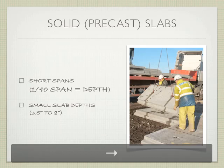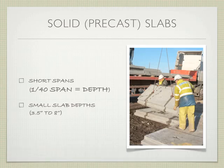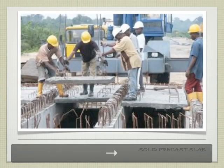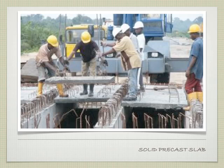Starting with the solid precast slab, we're talking about very short spans. One-fortieth of the span would be the depth, and the depth is going to be three-and-a-half to eight inches — so somewhere in the neighborhood of 20 feet in span. Here's an example of one of those precast concrete slabs being lowered into place over two bearing walls.